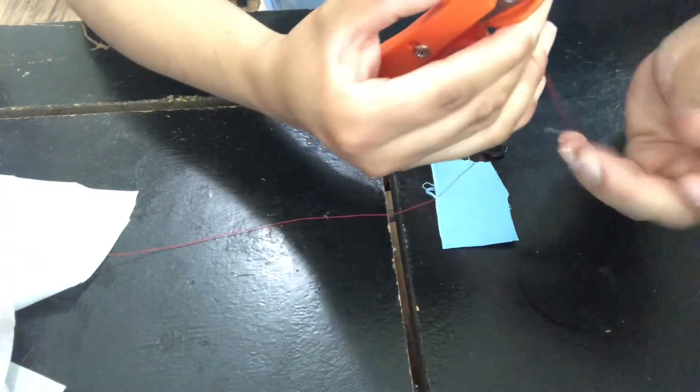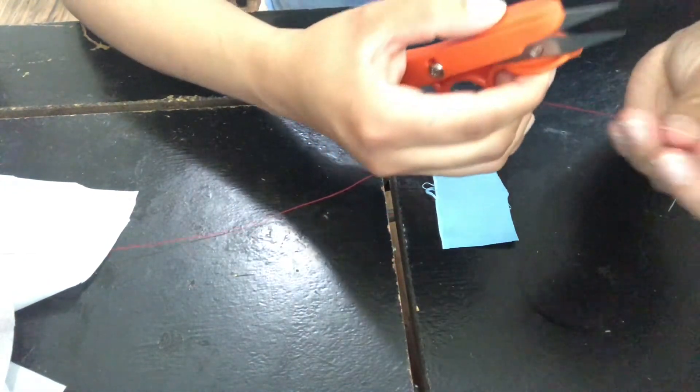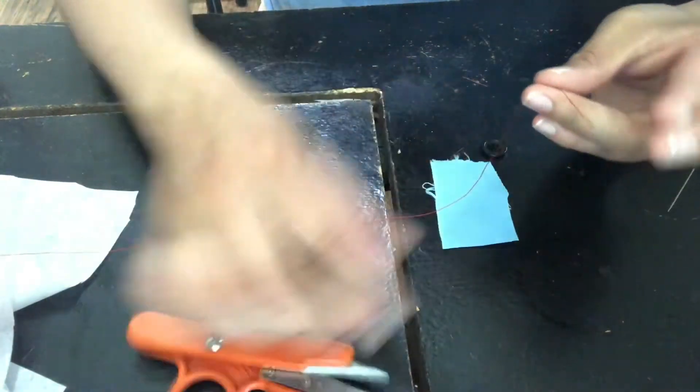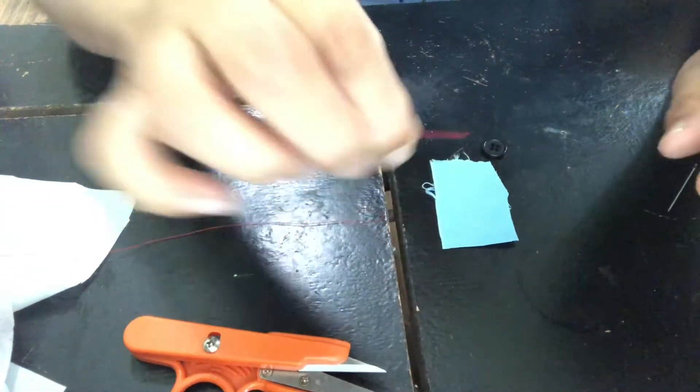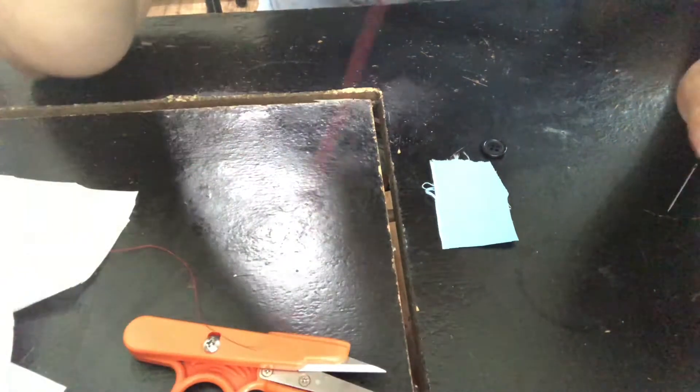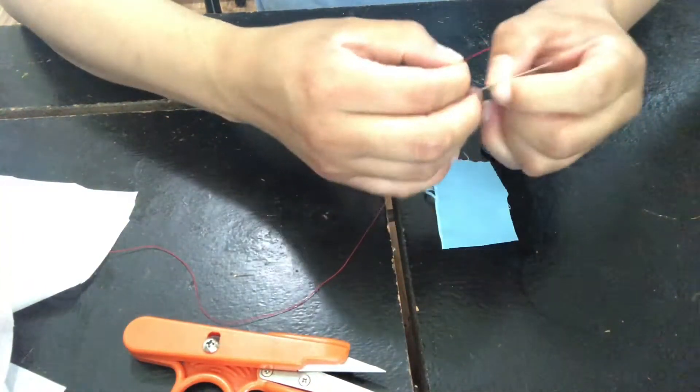What I find helps to get the thread through the needle is to cut this at a 45 degree angle. You can't really see here, but if you cut it at a 45 degree angle it's going to help slide through the needle just a little bit better.